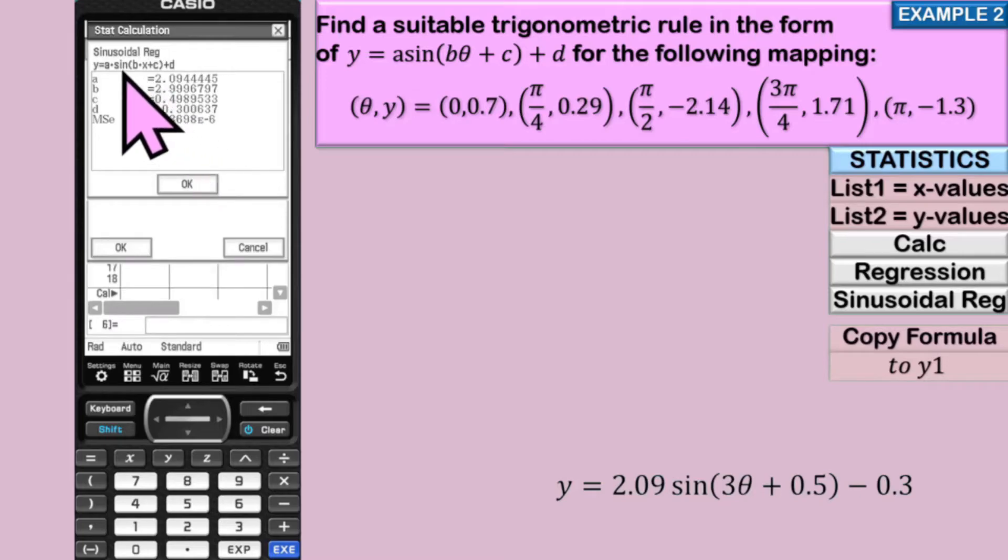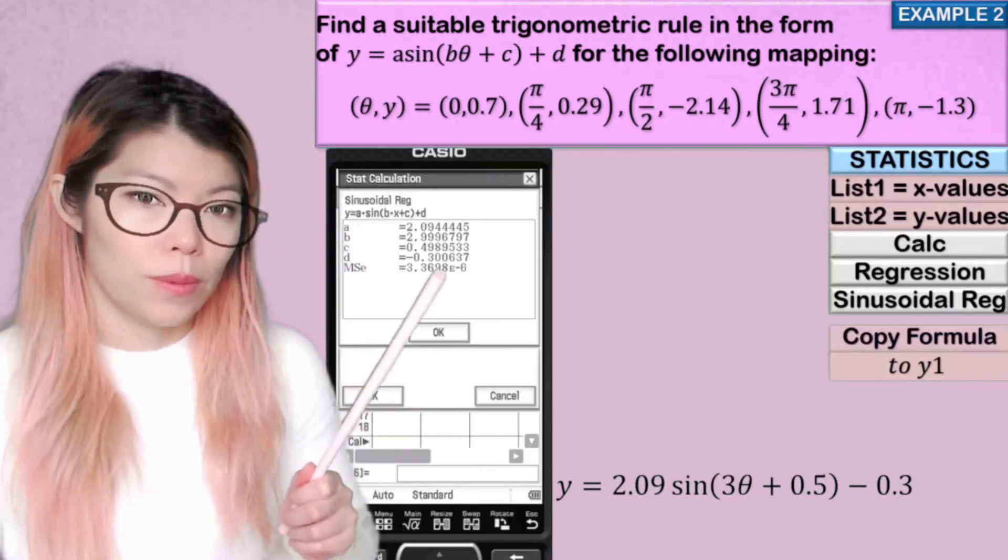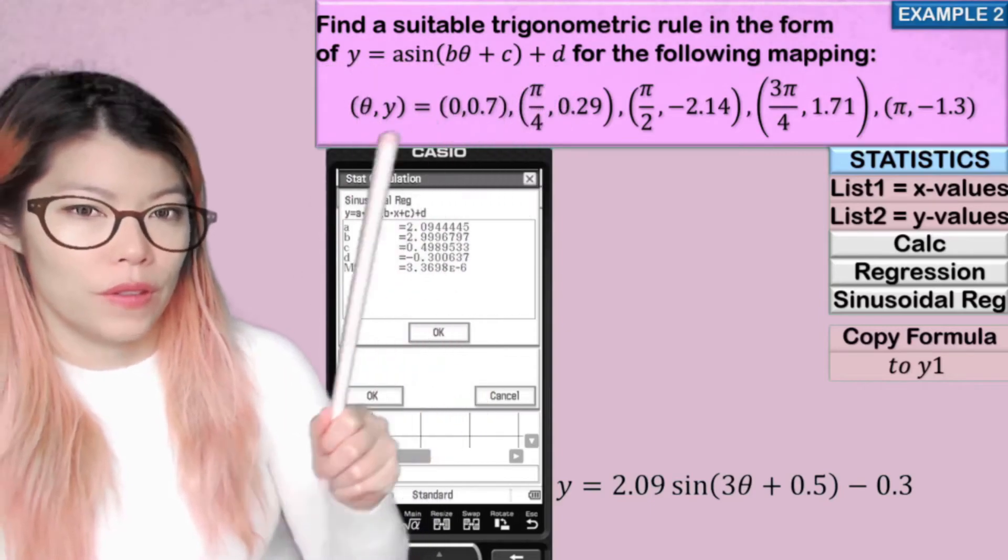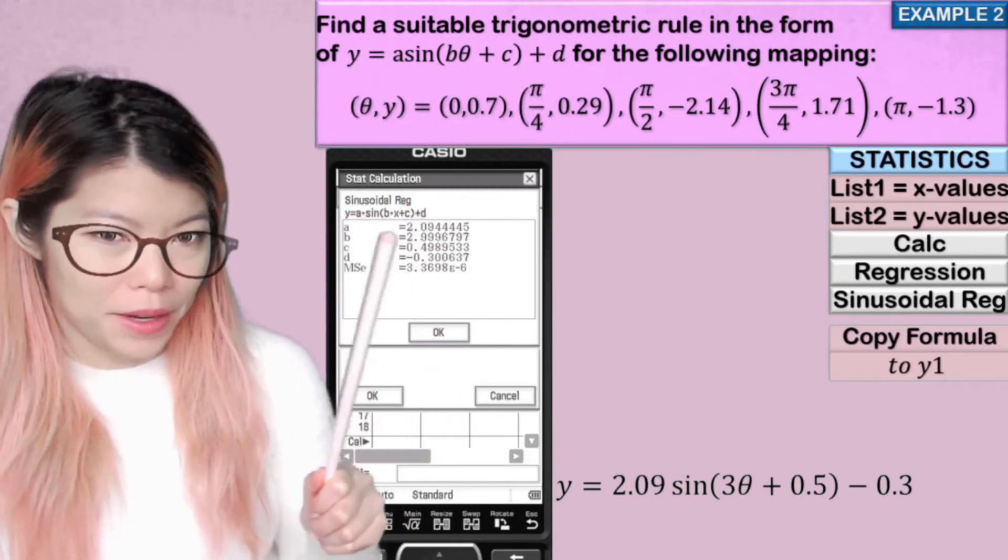And now we have our a, b, c and d values. So a is 2.09, b is 2.099, so that's three. C is 0.498, or in other words, 0.5. D is 0.3. So we plug in these values in our calculator into that equation over there, and it's the same as that equation then.